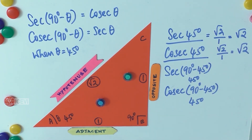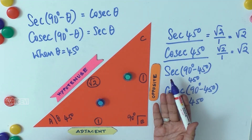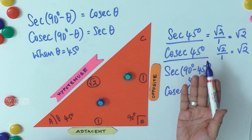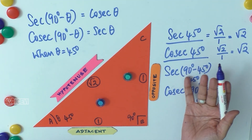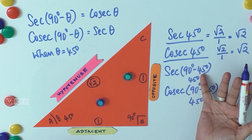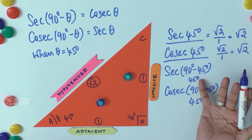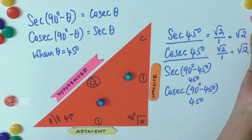We have already proved that sec(90° - 45°) equals sec 45°, which is again √2.